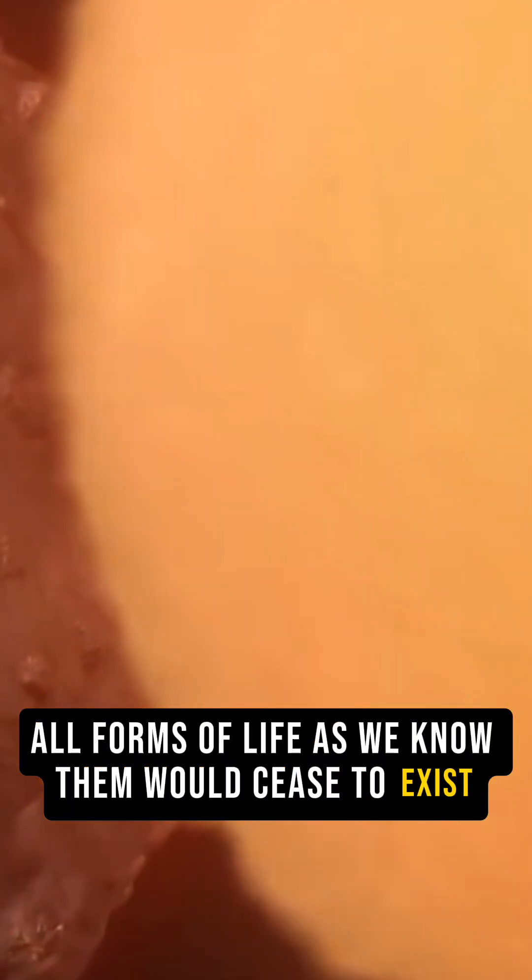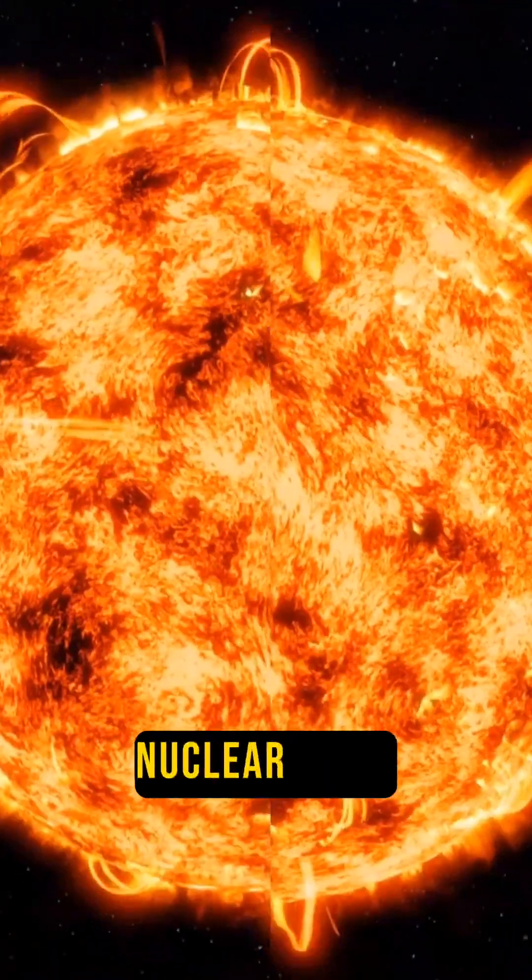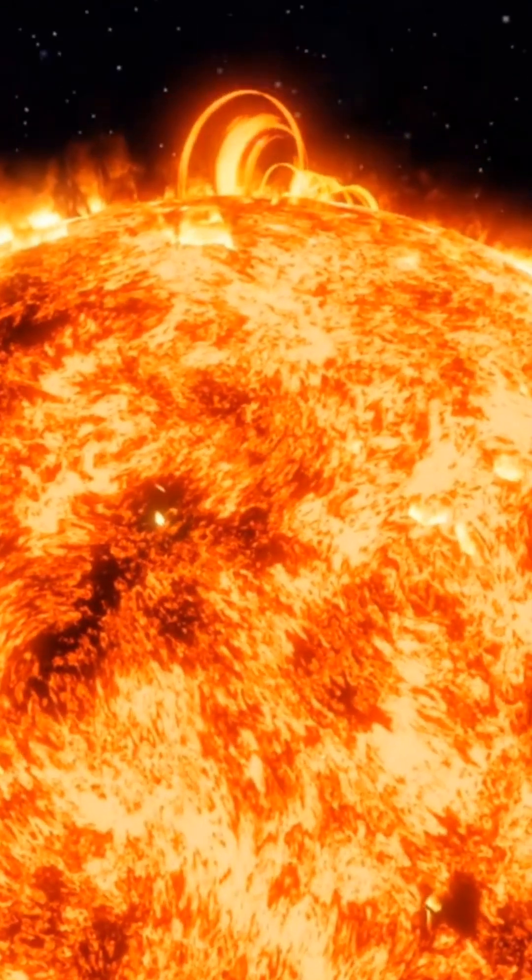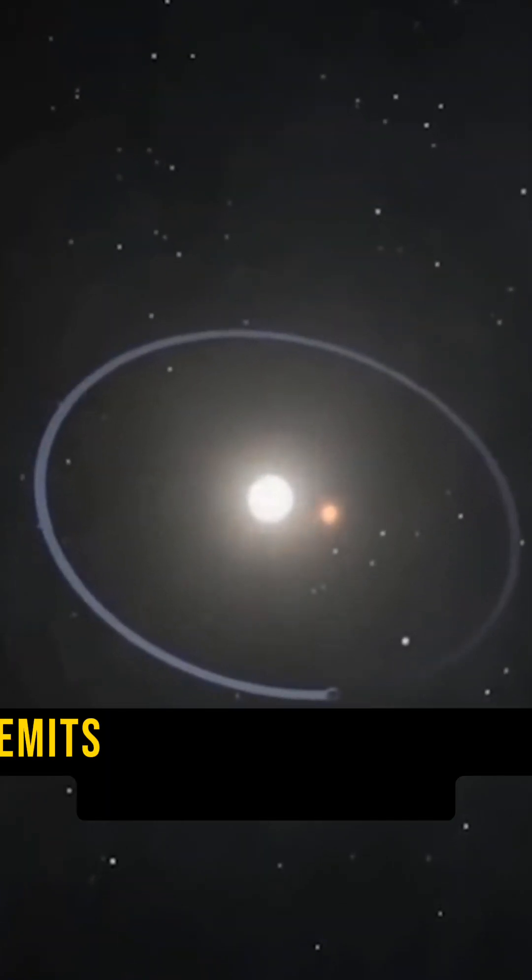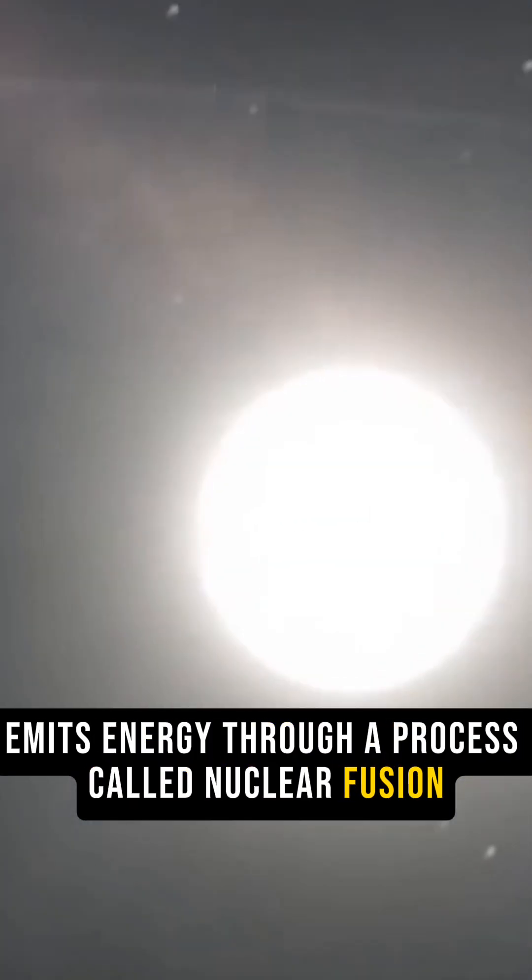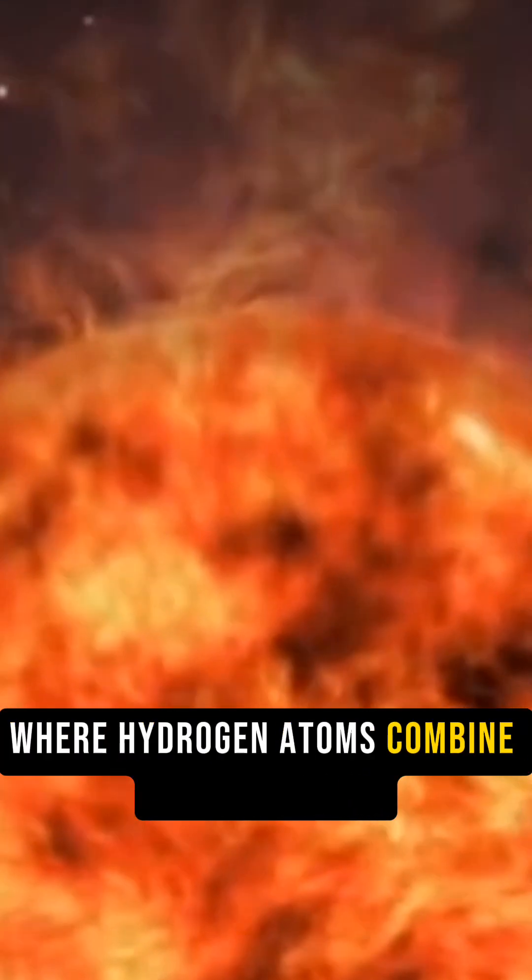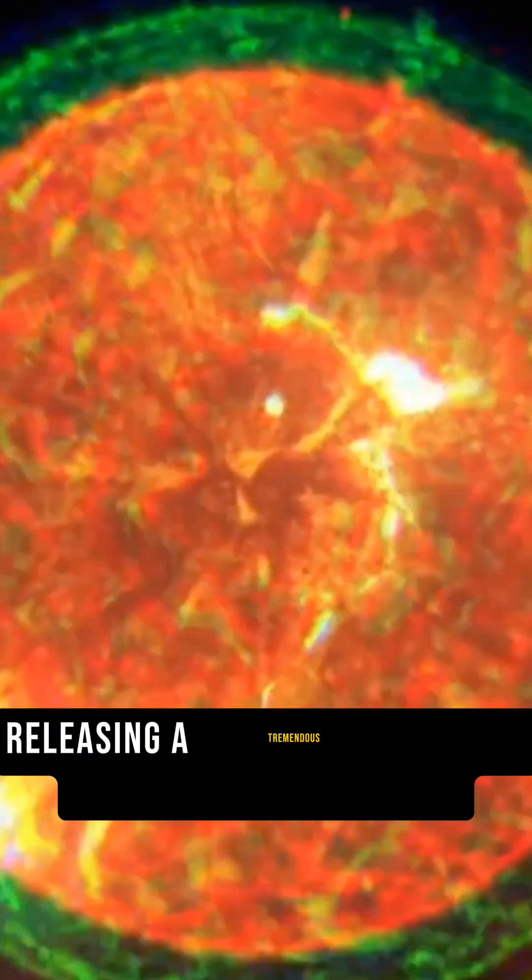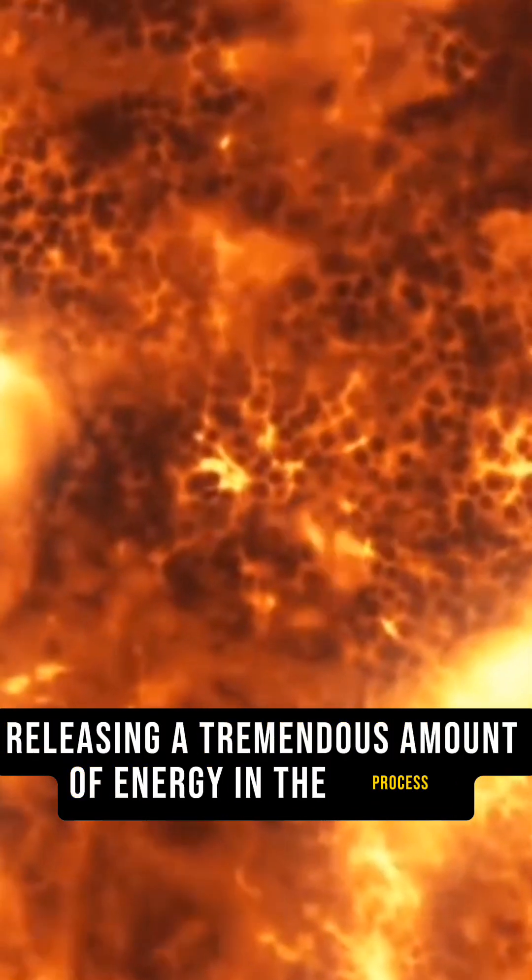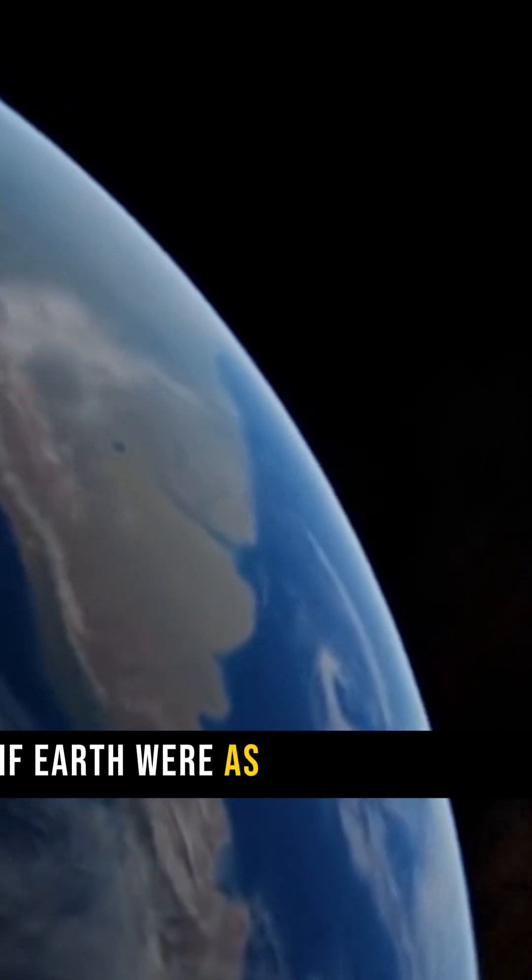Nuclear fusion: the sun primarily emits energy through a process called nuclear fusion, where hydrogen atoms combine to form helium, releasing a tremendous amount of energy in the process. If Earth were as large as the sun, nuclear fusion reactions might begin.